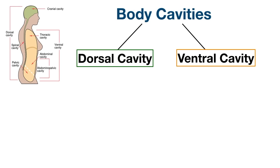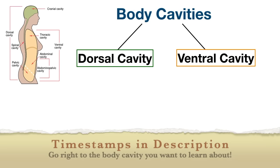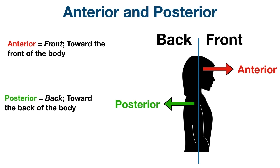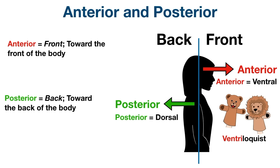First, there are two main cavities in the body: the dorsal cavity and the ventral cavity. We've talked about the terms dorsal and ventral in past videos. We learned that anterior means front or toward the front of the body, and posterior means back or toward the back of the body. Another name for anterior is ventral, and another name for posterior is dorsal. You can think of a ventriloquist for ventral, which literally translates to stomach talker — pointing to your stomach means pointing to the front of your body. For dorsal, think of a dorsal fin on the back of a fish.